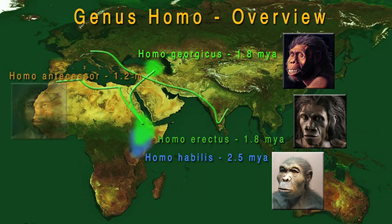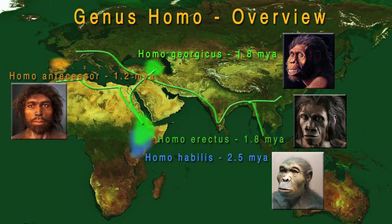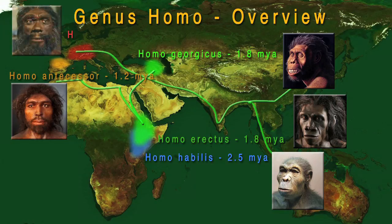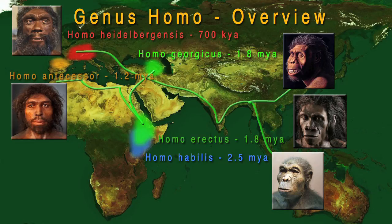Around 1.2 million years ago, we would find Homo antecessor appearing in what today is northern Spain. Homo antecessor is thought to be an early precursor of Homo heidelbergensis, who makes an appearance around 700,000 years ago. Homo heidelbergensis is found in Eurasia and Africa. Fossils of heidelbergensis have been found at numerous sites including Germany, France, Ethiopia, South Africa, Tanzania, and Indonesia.